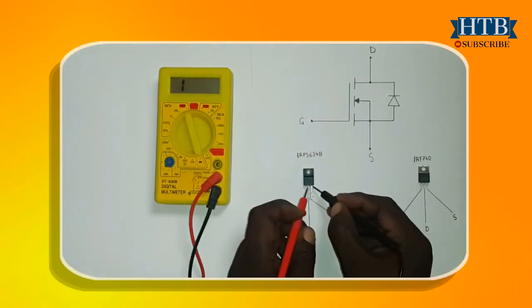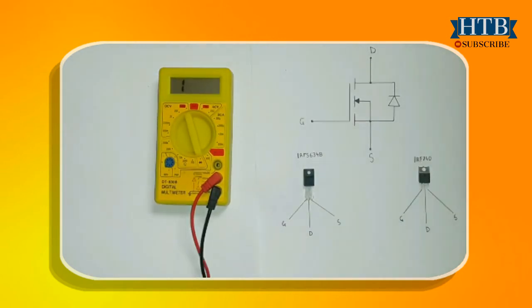After doing this, the reading across drain and source must disappear. This proves that this component is working.